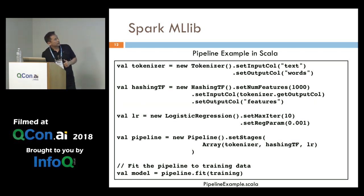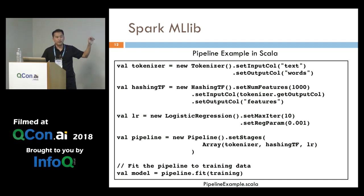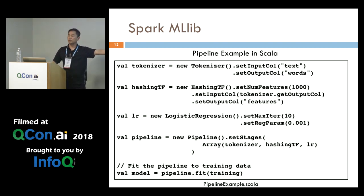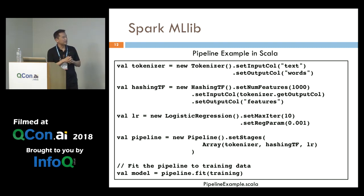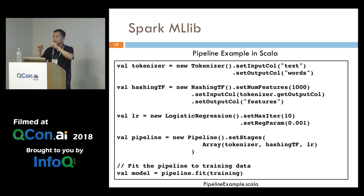So how does it look in code? The first one is the tokenizer — that's the transformer. The second is the hashing function — also a transformer. And then logistic regression is your estimator, your algorithm. You wire it up by creating a pipeline, setting the stages, and giving it an array of steps to execute in order. At the bottom, you call fit on the pipeline and give it the training data. It automatically executes those stages in the right sequence, making things much easier to manage — imagine having 20 of these without a pipeline.